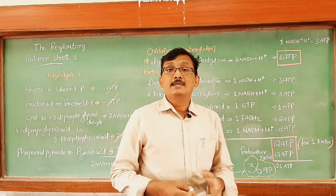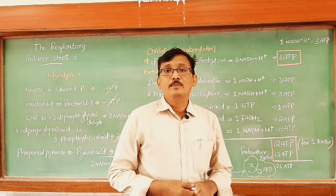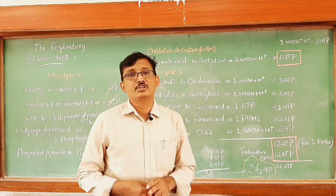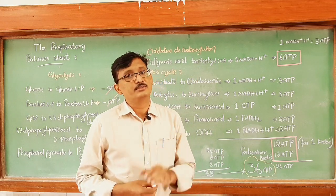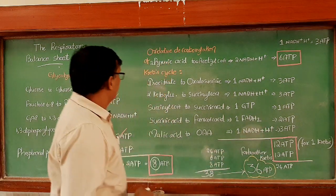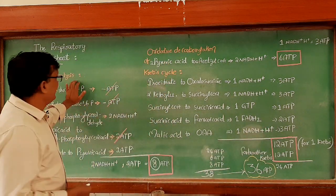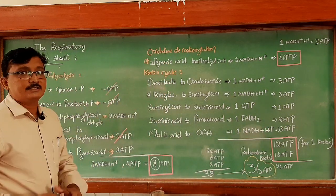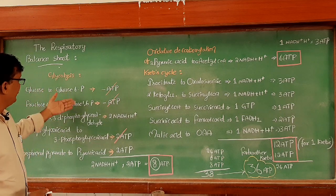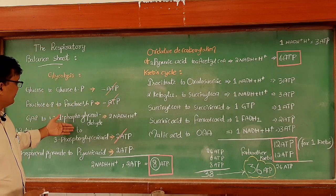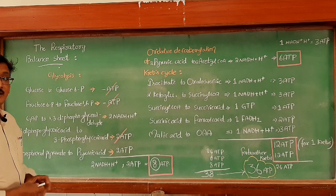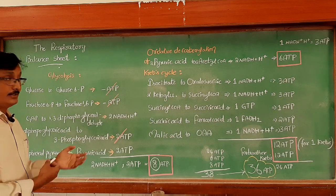So let us calculate how much energy is released after the complete oxidation of one glucose molecule. Here, let us take first glycolysis. In glycolysis, there are various steps where you can see energy is released or energy is utilized.